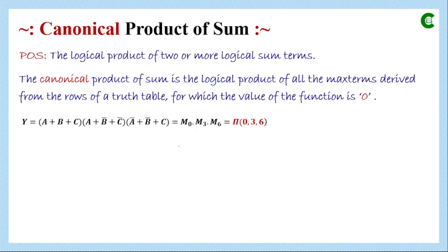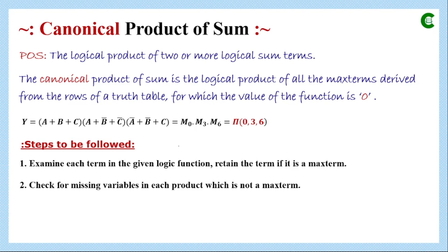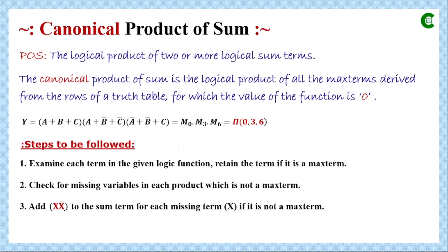If a logical function is in non-canonical POS form, we transform it to canonical form using similar steps. The first step is: examine each term and retain it if it is a maxterm. If it is not a maxterm, identify the missing variable. Then add (X times X-complement) for each missing variable X to that term, since X times X-bar equals zero and adding zero doesn't change the value.